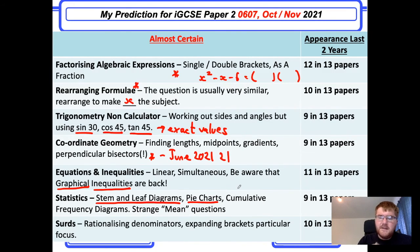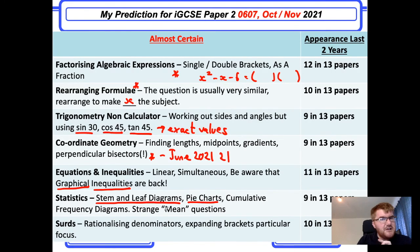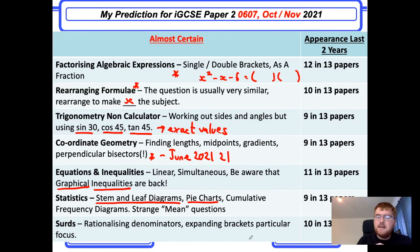Surds used to be one of my big favourites on paper two and they still come up — they haven't disappeared entirely. The two main things to focus on are rationalising denominators, which has always been important, and expanding brackets with surds. Make sure that is your particular focus for paper two.